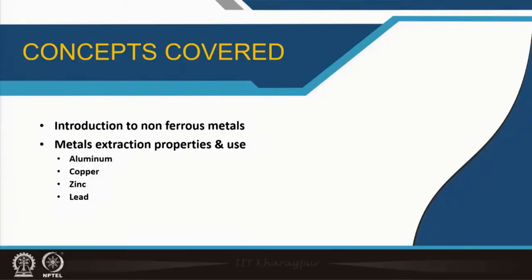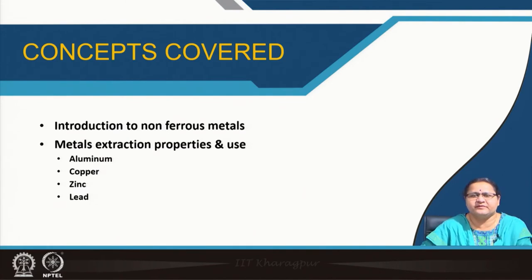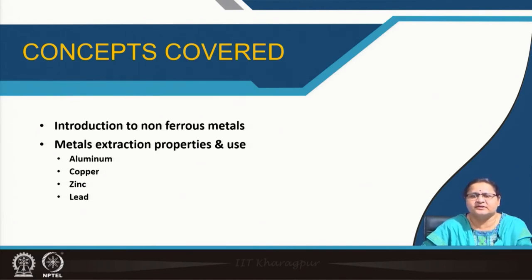We will cover non-ferrous metals, metal extraction processes — very briefly, as we elaborated on metal extraction in previous lectures. It will be very similar. We will cover salient properties and uses. We will try to cover aluminum, which has the maximum use in the building industry as a non-ferrous metal, followed by copper, zinc, lead, and tin, which was used in the Pilkington process of making glass. These all have industrial applications for building materials.